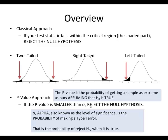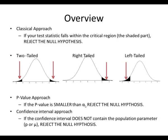We set alpha depending on how severe it is for us to make an error. A Type 1 error means we reject the null hypothesis when we weren't supposed to — that value is actually true. The third method is the confidence interval approach: if our confidence interval does not contain the population parameter p or mu, depending on whether it's proportions or means, then we reject the null hypothesis.